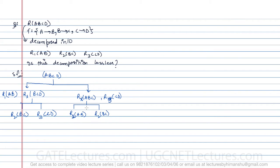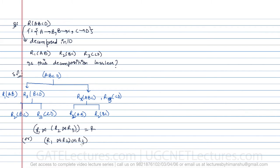A decomposition is lossless if and only if R1 natural join R2 natural join R3 equals R. If this condition holds, we can say the relation has a lossless decomposition.